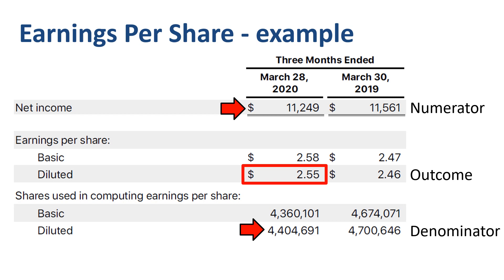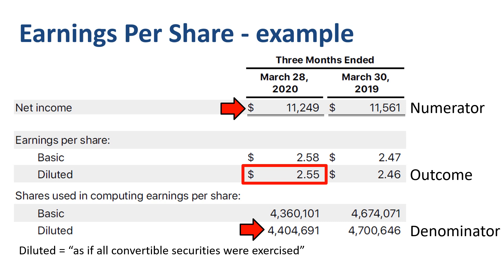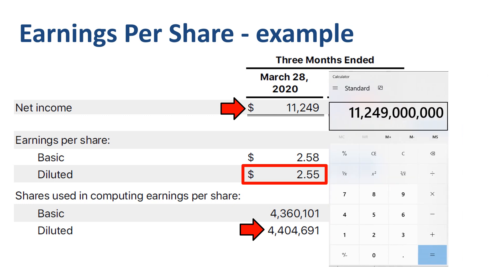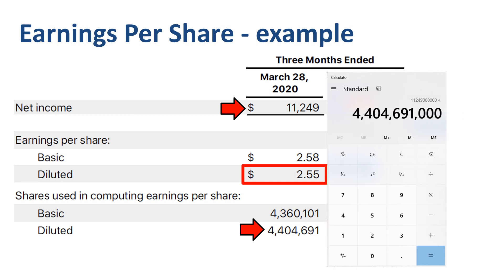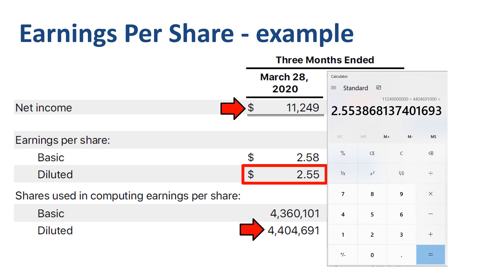By the way, the diluted number of shares means as if all convertible securities were exercised. The basic number of shares is the number that currently exists. The diluted number of shares is the number that could exist if all convertible securities were exercised at the earliest point in time — things like stock options, convertible debt, and warrants. Let's get the calculator out: $11.2 billion in net income for the quarter, divided by 4.4 billion shares, results in earnings per share of $2.55.